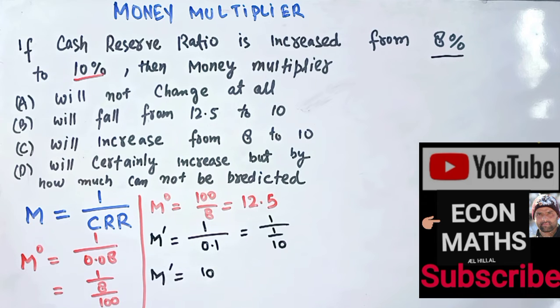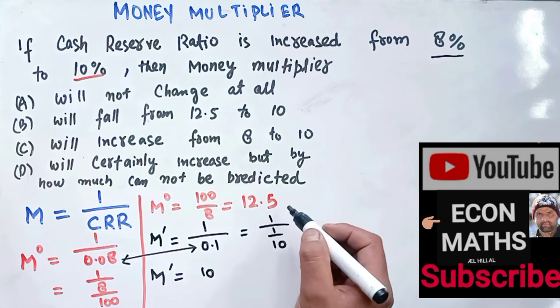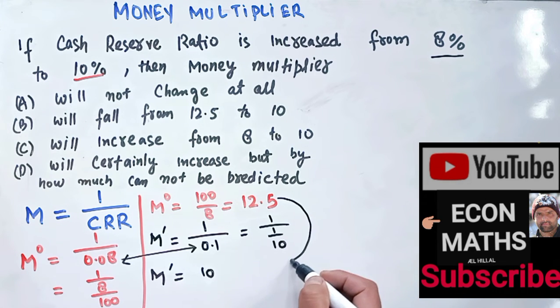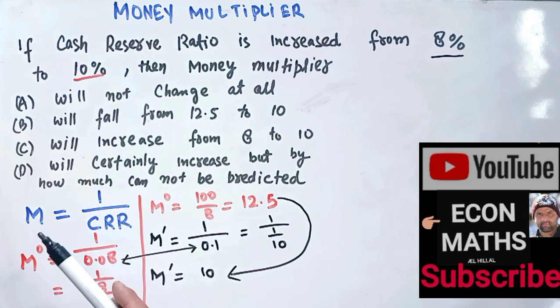And here we can see as the CRR has increased from 8 percent to 10 percent, money multiplier has decreased from 12.5 to 10. So there is an inverse relationship between them - they are inversely proportional to each other, the money multiplier and CRR.